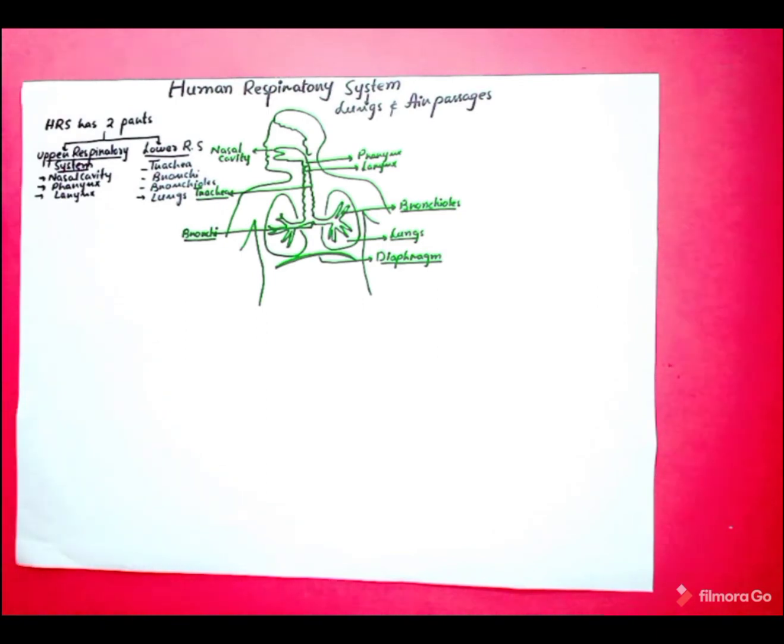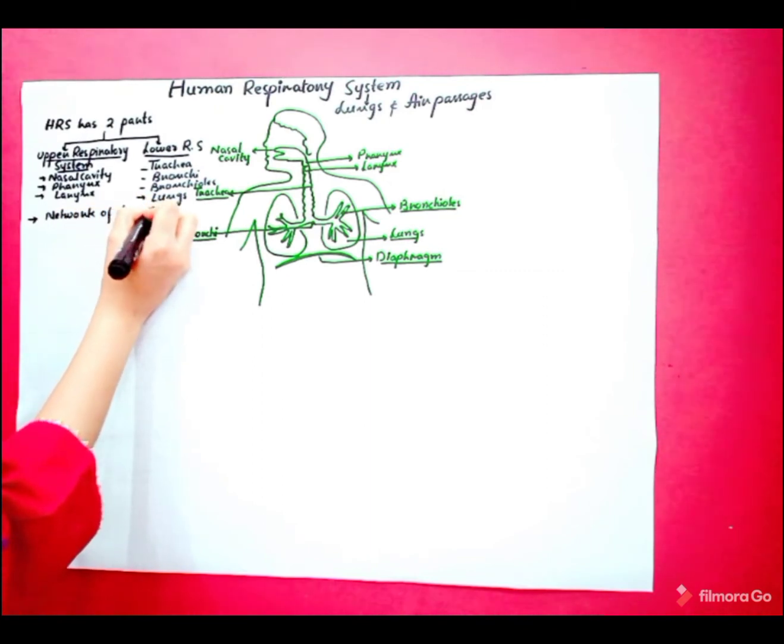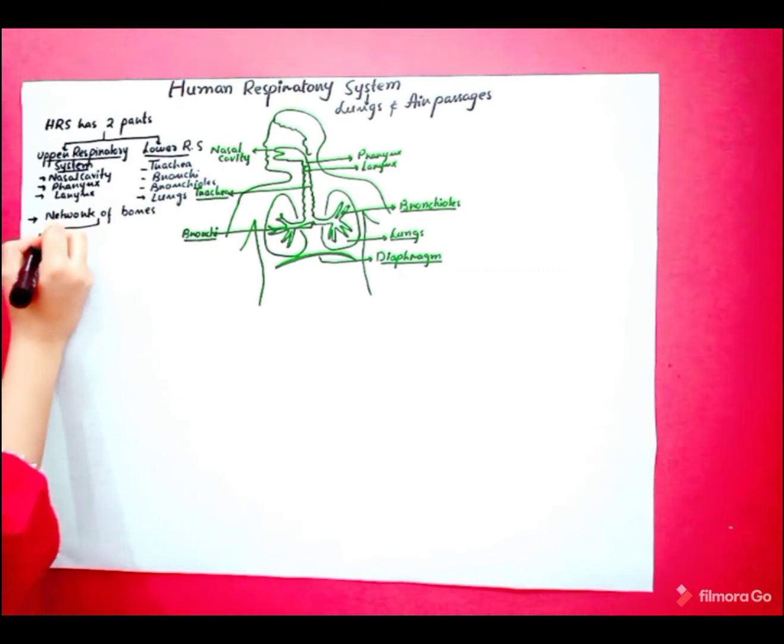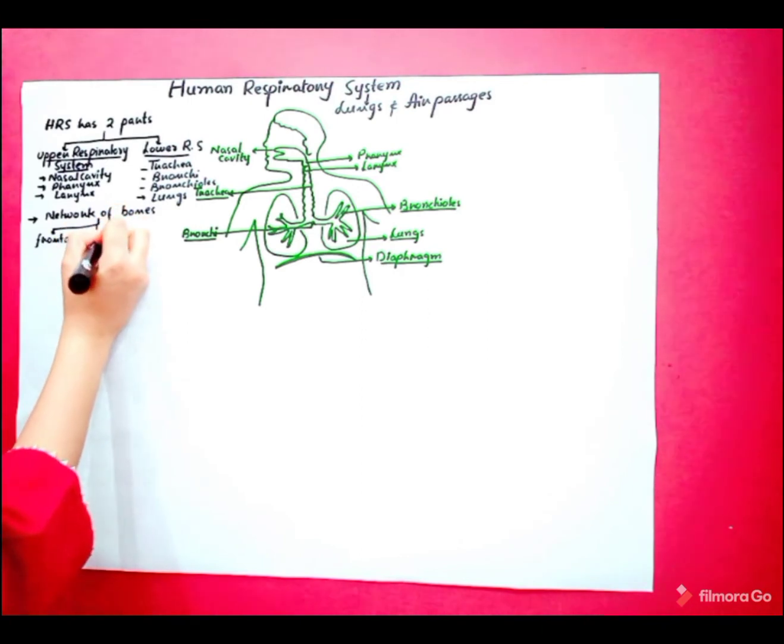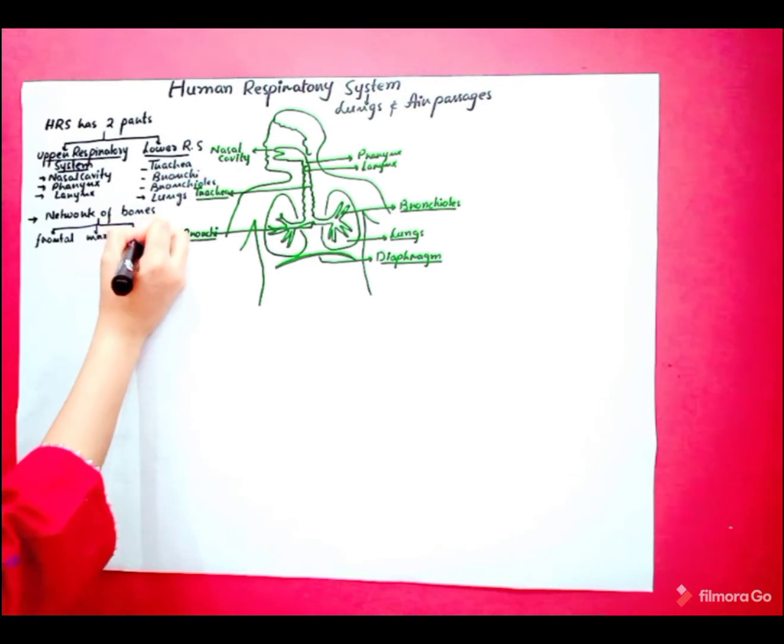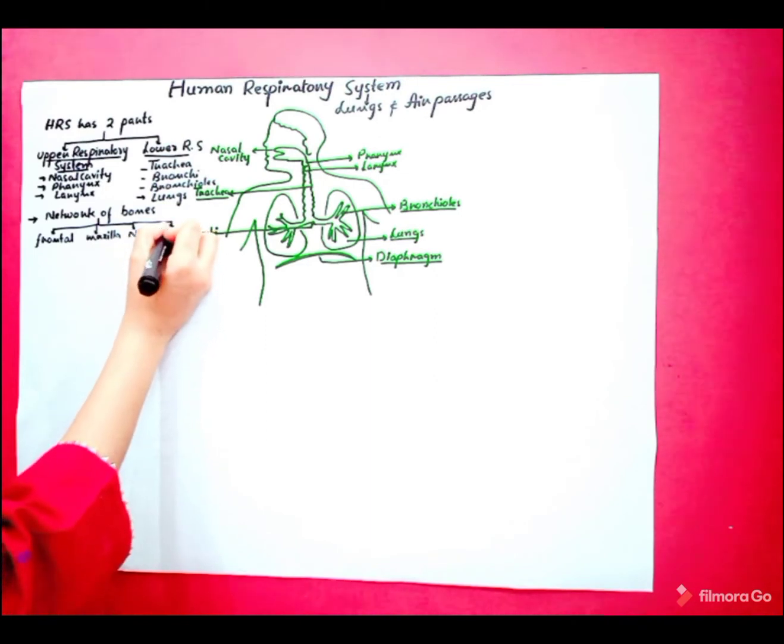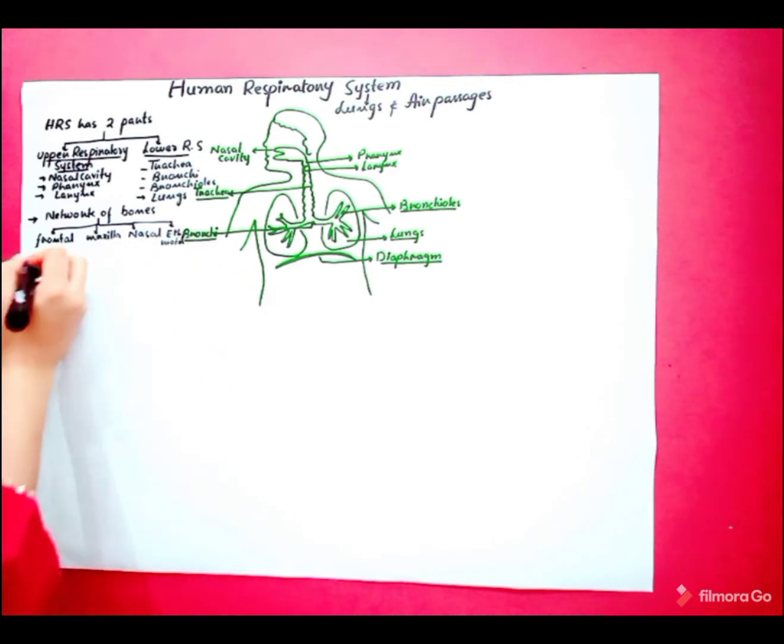The nasal cavity is supported by network of bones. These bones are frontal, maxilla, nasal, ethmoid, and vomer.